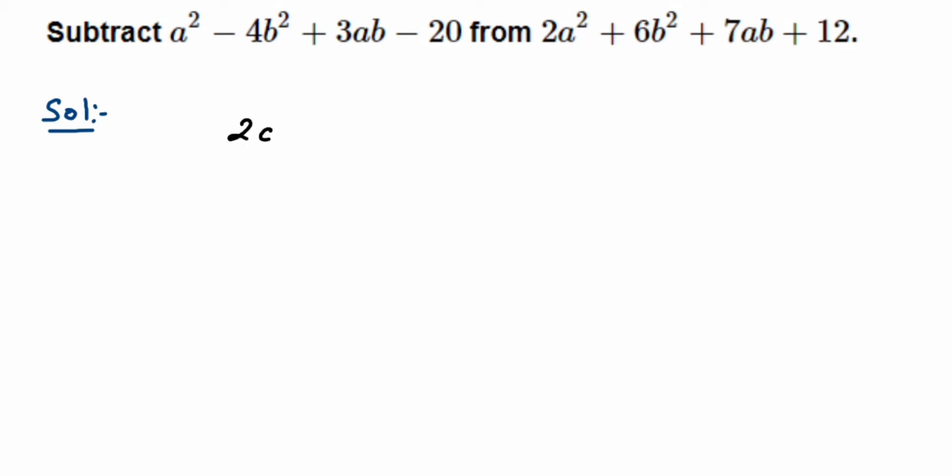So it's 2a² + 6b² + 7ab + 12. Now when you're subtracting, the first expression I have to write down below the like terms. For example, I have a² - I'm going to write it down below the 2a². Then -4b² I'm going to put it down below the 6b². Then 3ab, so put it down below the 7ab, and then -20 below the constant which is 12.